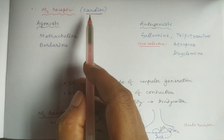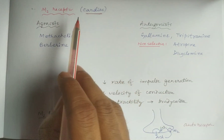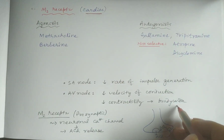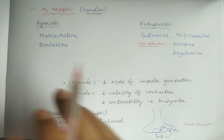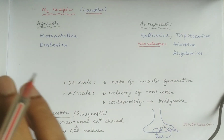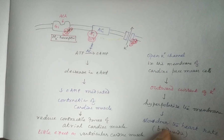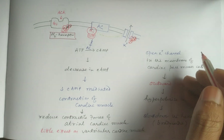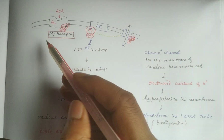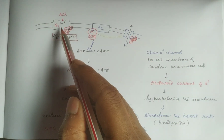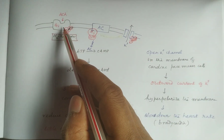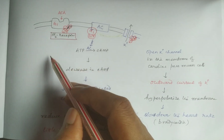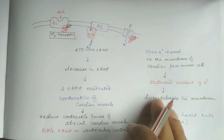In the heart, its main function is bradycardia. The M2 receptor is a G-protein coupled receptor of the Gi (inhibitory) type.